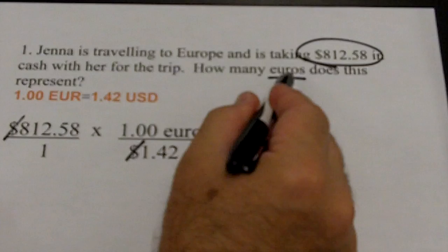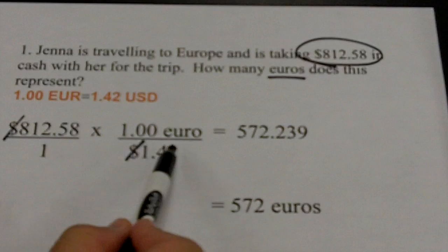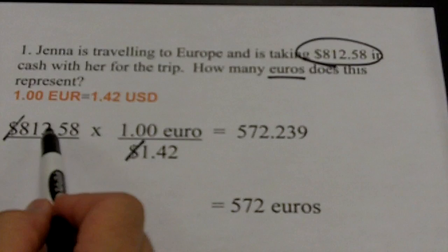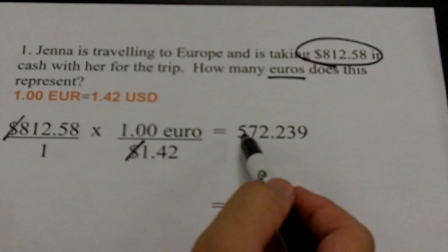I look to see if that's what I'm being asked for — that is exactly euros. So I'm done and can get out my calculator. Students often ask: do I multiply or divide? If the second number is on the bottom, I divide; if it's on the top, I multiply. Anything times one is itself, anything divided by one is itself, so don't worry about ones. The question is: do I multiply or divide 812.58 by 1.42? I divide because 1.42 is on the bottom. When I do that, the number that appears is 572.239.